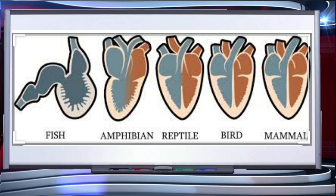In fishes, the heart pumps out deoxygenated blood, which is oxygenated by the gills and supplied to the body parts. From there, deoxygenated blood is returned to the heart — this is called single circulation. In amphibians and reptiles, the situation is different.